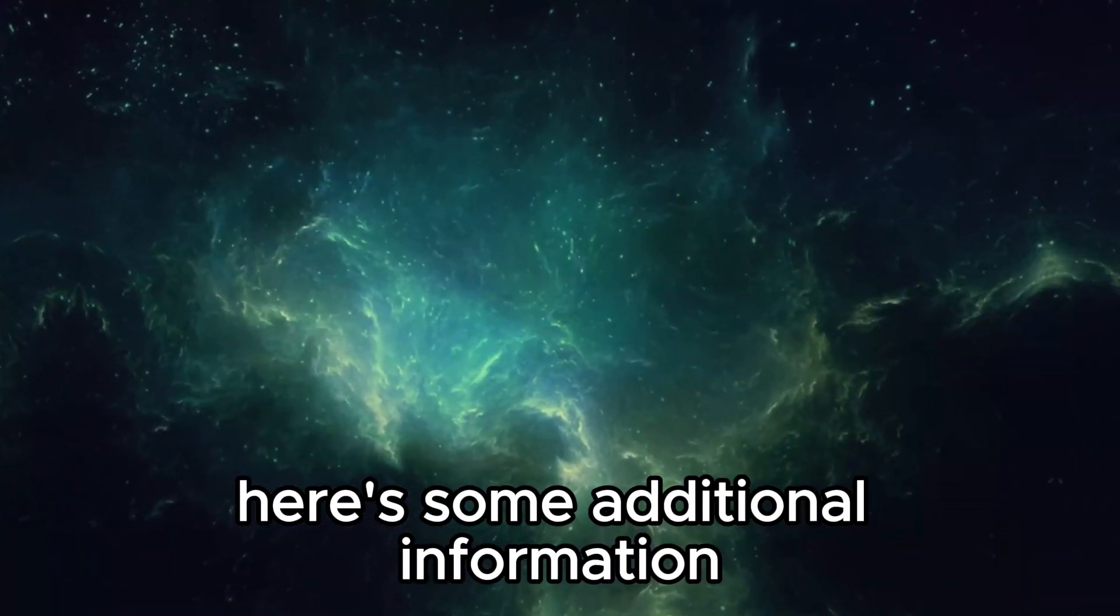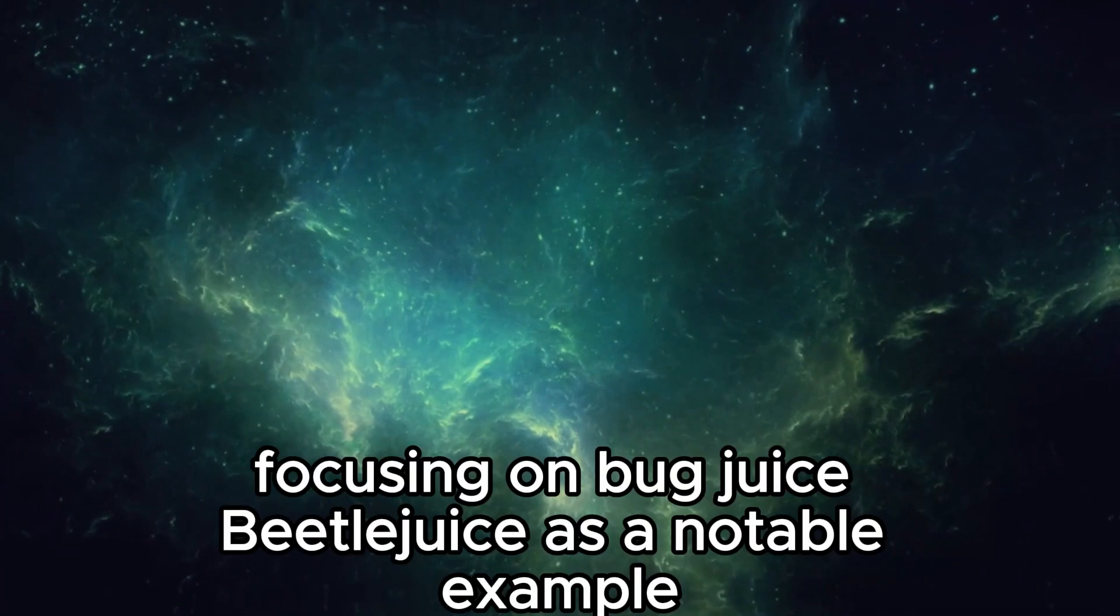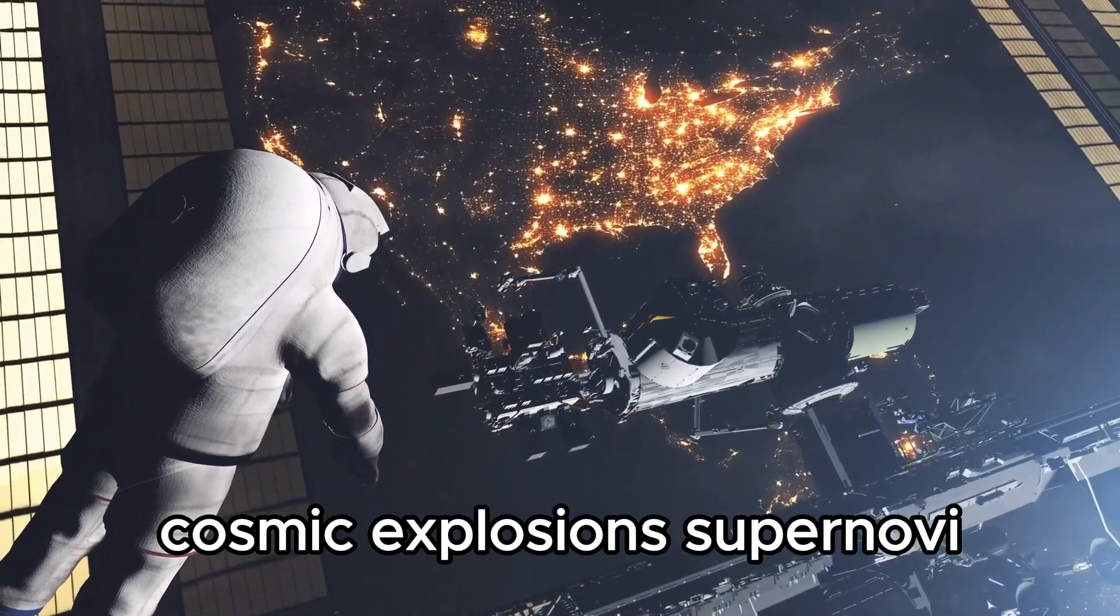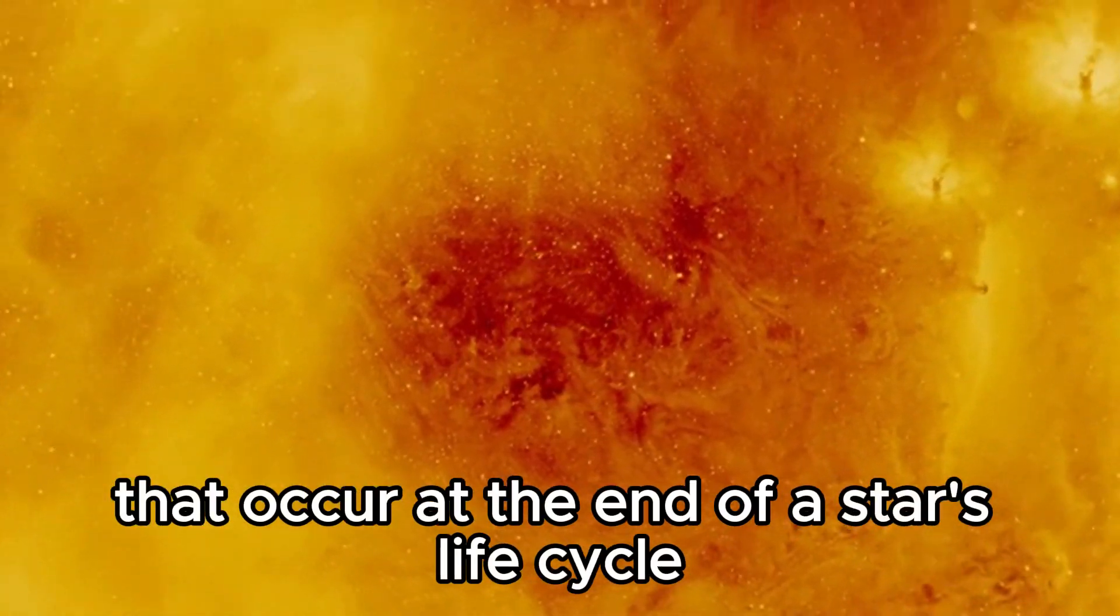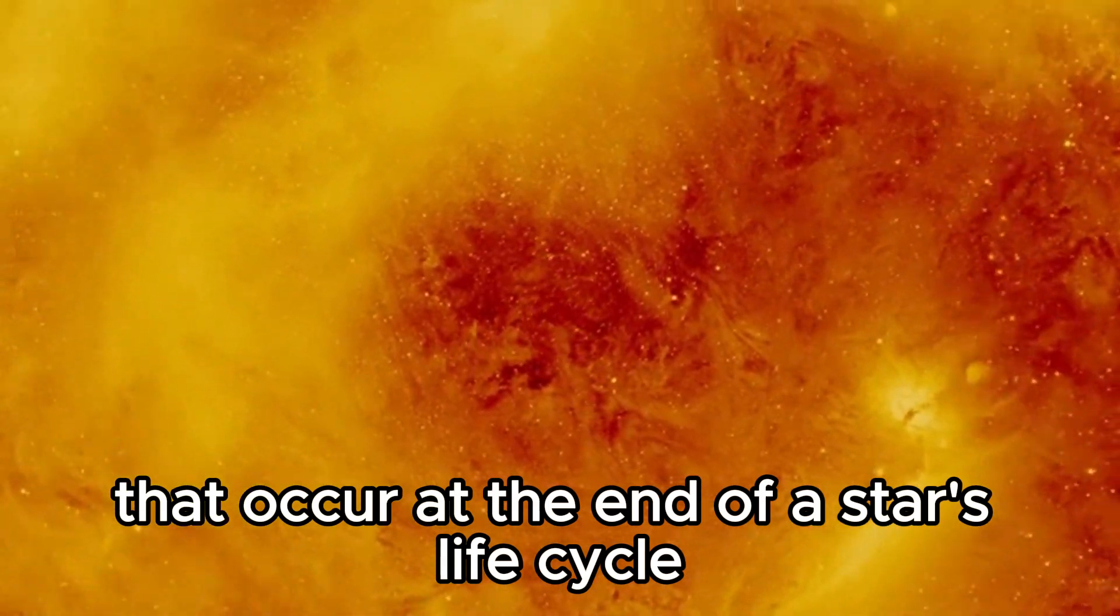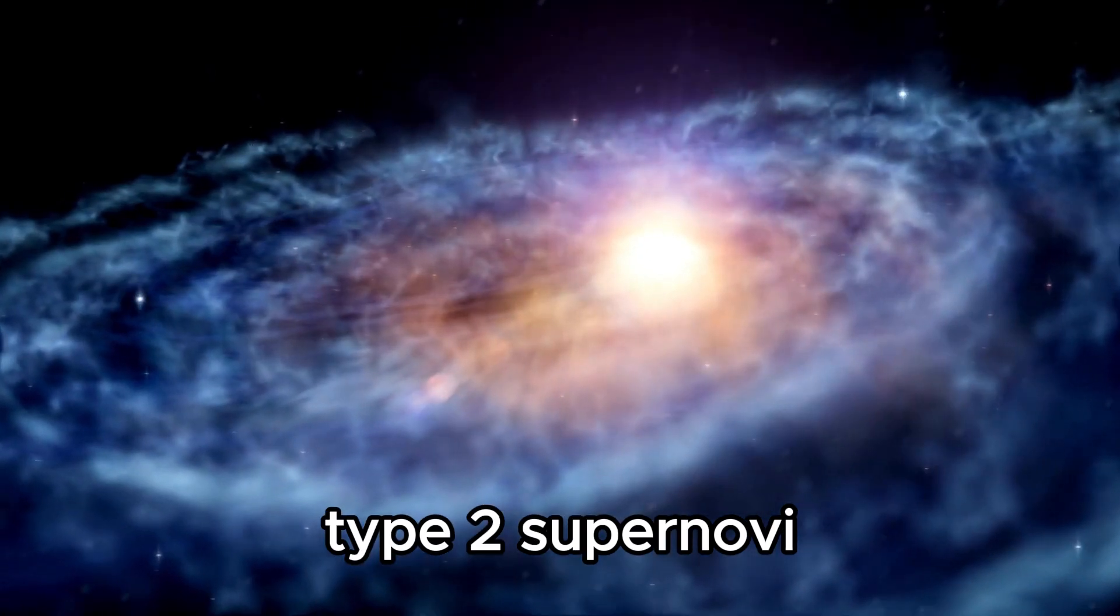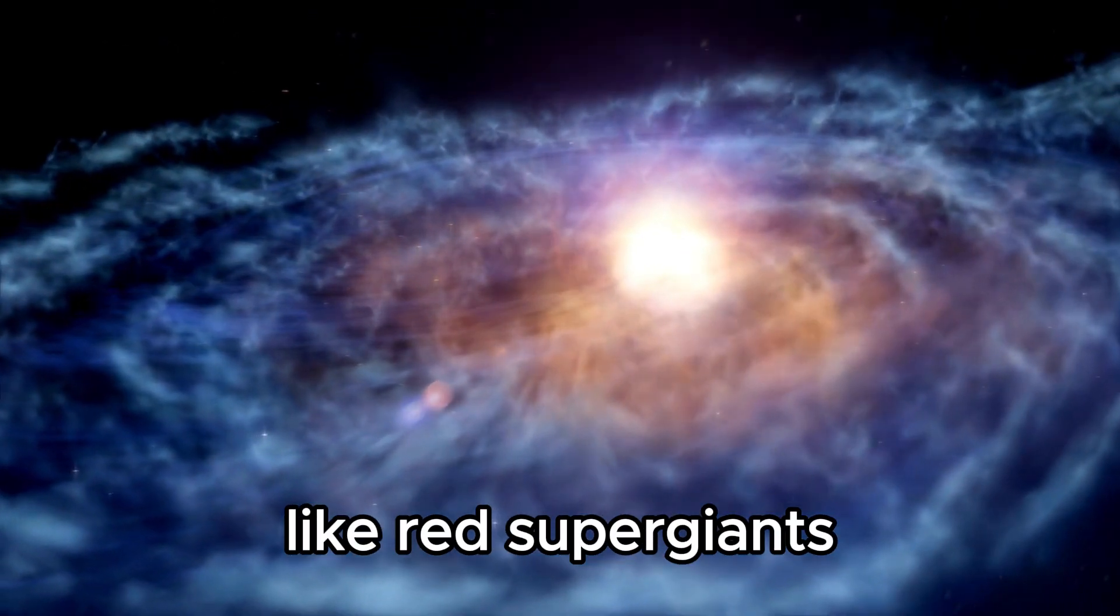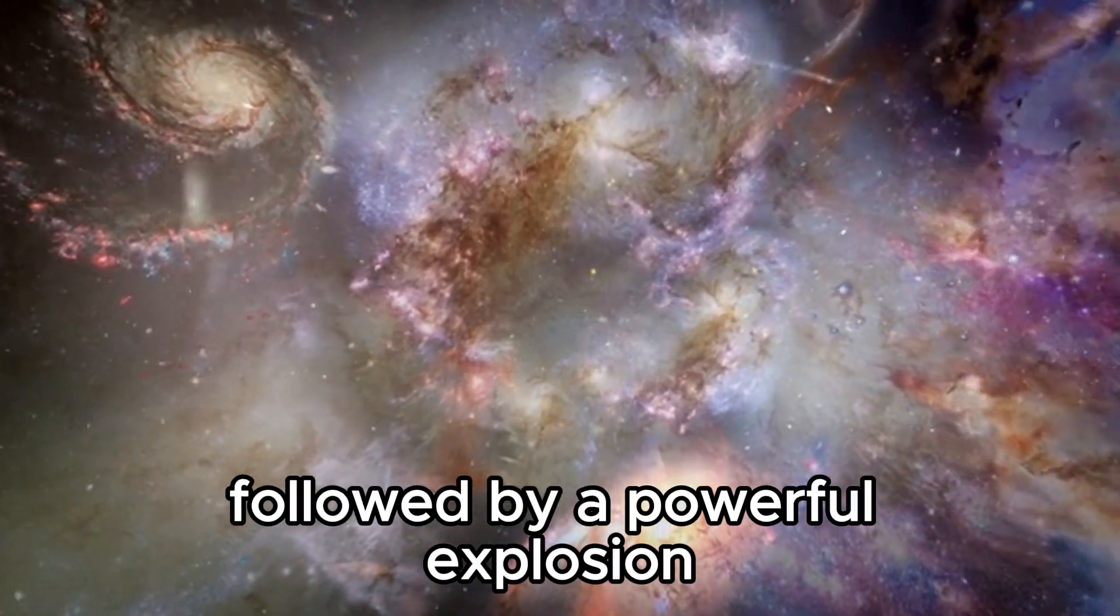Here's some additional information about supernovae and red supergiant stars. Supernovae are incredibly powerful explosions that occur at the end of a star's life cycle. There are two main types: Type 1 and Type 2. Type 2 supernovae, which include explosions of massive stars like red supergiants, are characterized by the collapse of the star's core followed by a powerful explosion.